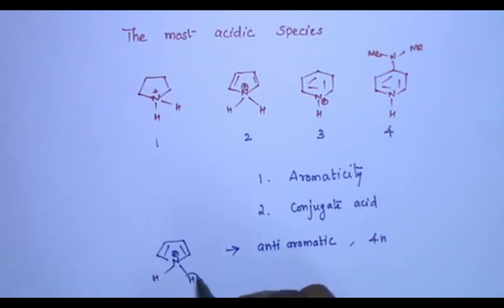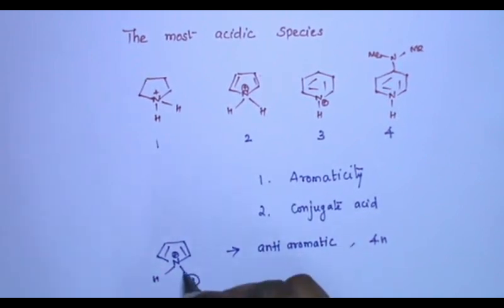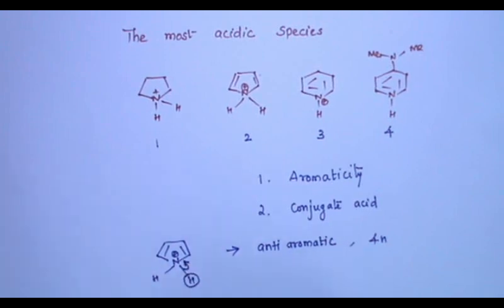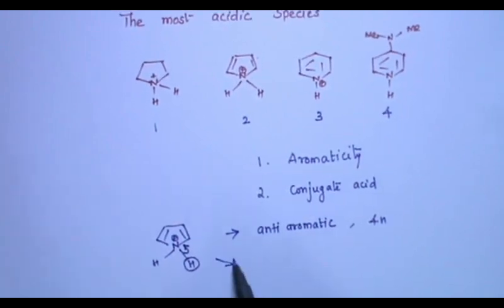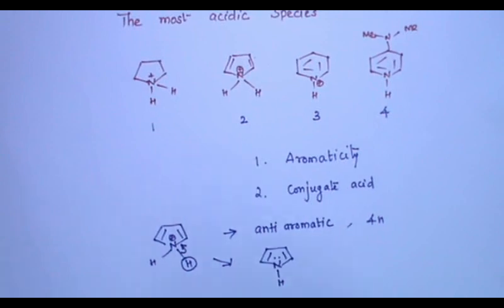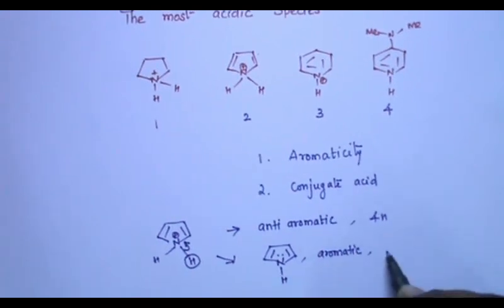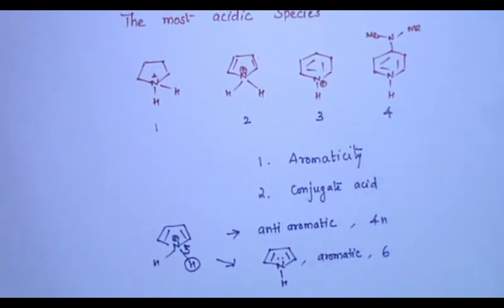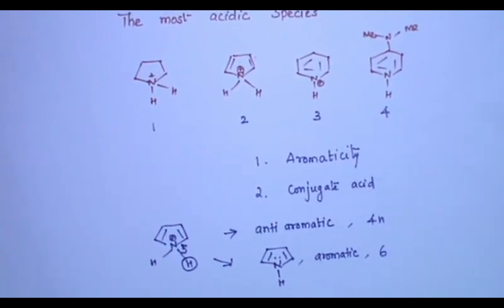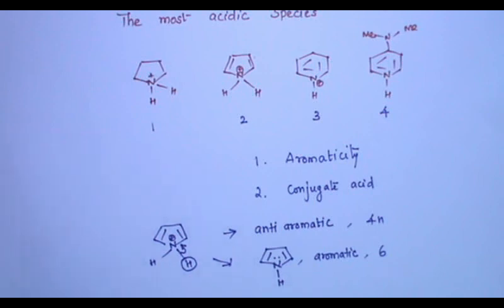It tries to form an aromatic compound by losing its proton. If it loses the proton — that is H⁺ — the bond will fall here and what we get is pyrrole. You may know pyrrole is aromatic. The number of electrons involved in the delocalization will be six: four will be pi bond electrons and one lone pair of electrons. Because of that, this proton is readily lost by this species, which means this proton is highly acidic.